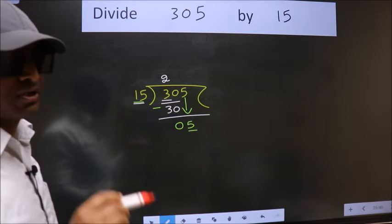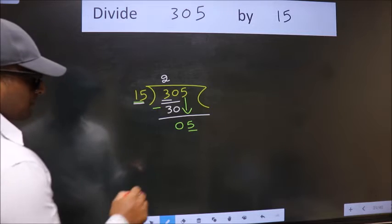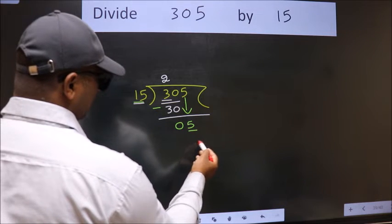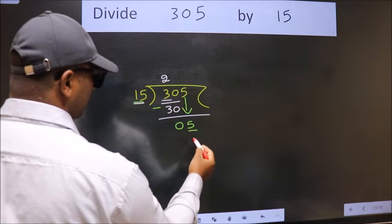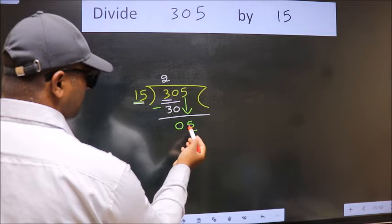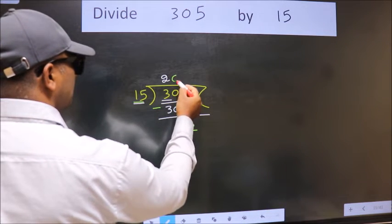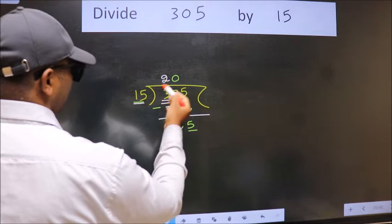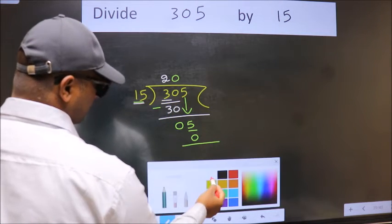You should not do. Instead of that, what we should think of doing is, which number should we take here. If I take 1, we will get 15. But 15 is larger than 5. So what we do is we take 0 here. So 15 into 0 is 0.